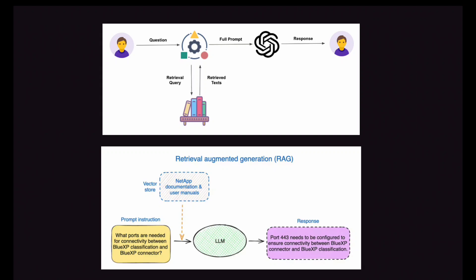Previously, the LLM or ChatGPT was unable to process that PDF directly. But RAG can do it — RAG has its own tools. So the response becomes: 'Port 443 needs to be configured to ensure connectivity between Blue XP connector and Blue XP classification.' What the LLM model previously could not answer, it can now answer with the help of RAG.